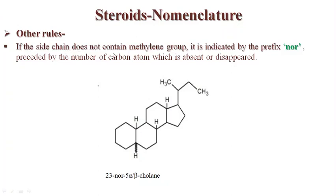If the side chain does not contain a methylene group, it is indicated by the prefix 'nor' preceded by the number of the absent carbon atom. Here, from position 23 the CH₂ side chain is missing, so the prefix 'nor' is written with position 23. The configuration at the 5th position is important to mention — it is written as alpha or beta. This nucleus is cholane, so we write 23-nor-5α/β-cholane.